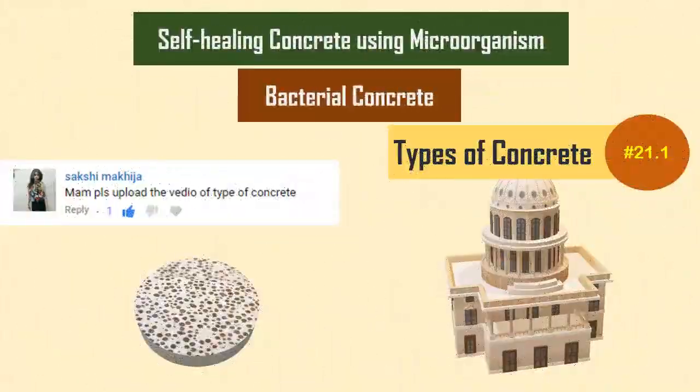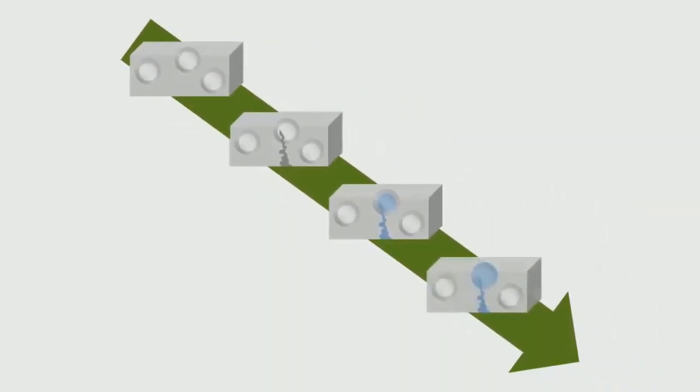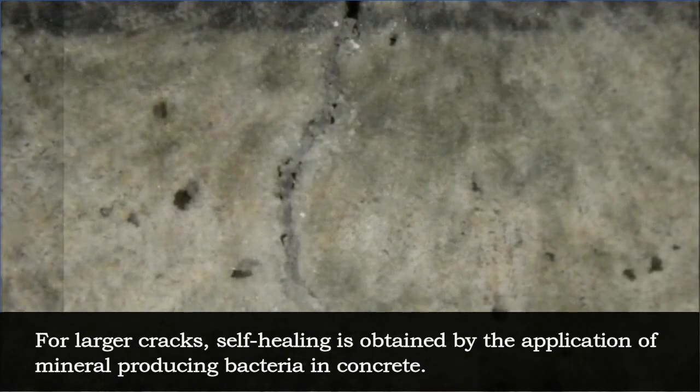Self-healing concrete using microorganisms, also called bacterial concrete. In this type of concrete, the cracks formed are healed with the help of bacterial reaction in the concrete after hardening. We know that concrete heals small cracks by the concept of autogenous healing.